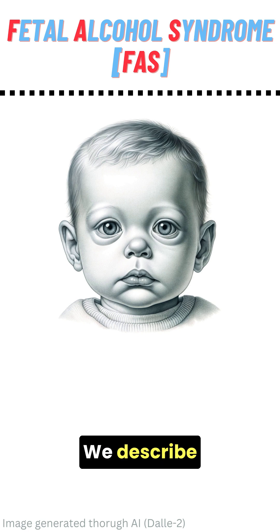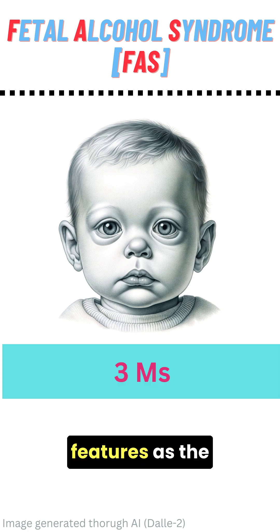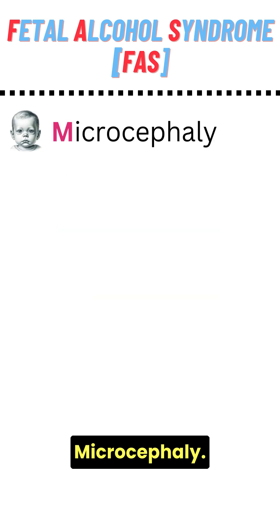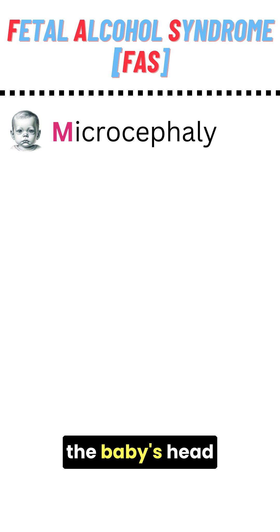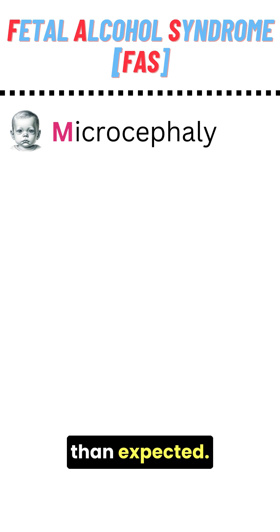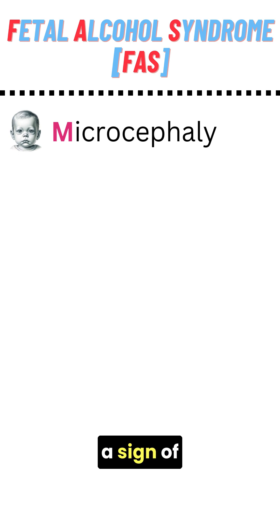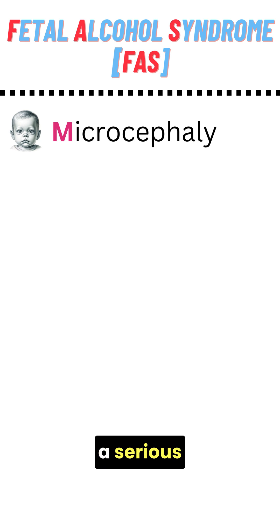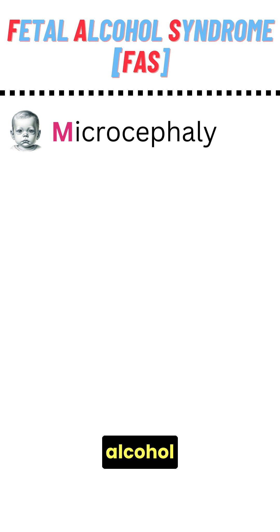We describe these features as the 3 Ms of fetal alcohol syndrome. The first M is microcephaly — this is where the baby's head is significantly smaller than expected. Microcephaly is a sign of underdeveloped brain growth, a serious consequence of prenatal alcohol exposure.